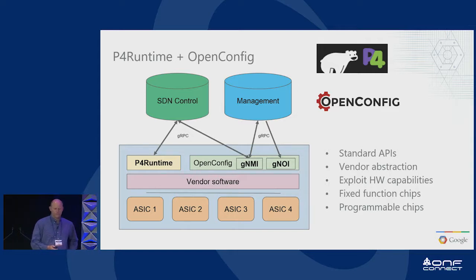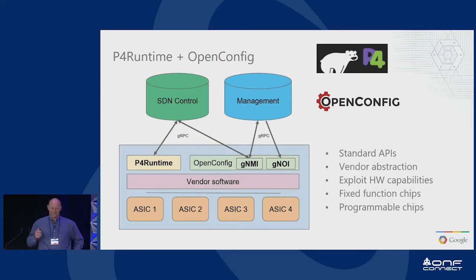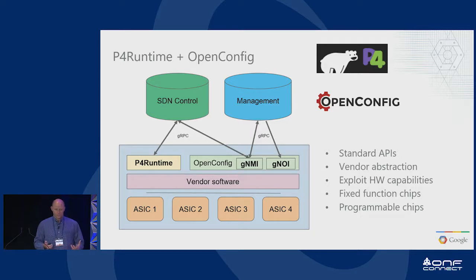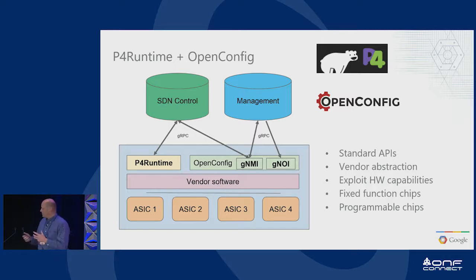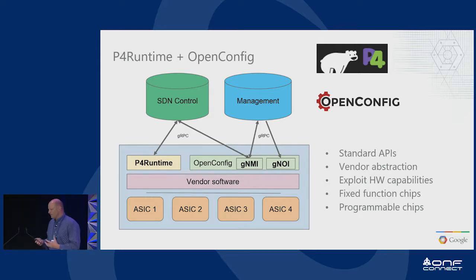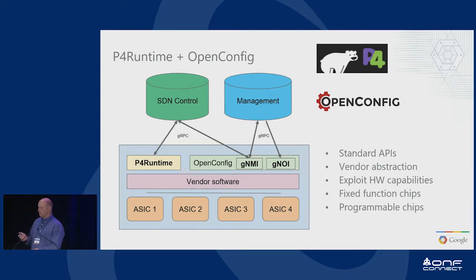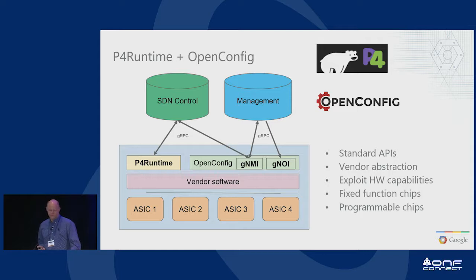So P4 runtime gives us some vendor abstraction. A P4 program exposed to your SDN controller doesn't have to be exactly what's running on the ASIC. The ASIC could be fixed function with a slightly different pipeline, or a programmable chip with a slightly different program. But the important thing is those differences are abstracted to your controller. Some people say they don't want to use P4 runtime because they don't use P4 chips — but there's no need for a programmable chip. We're looking at P4 runtime to provide all the functionality on top of fixed function chips and then future-proof us for the use of programmable chips.